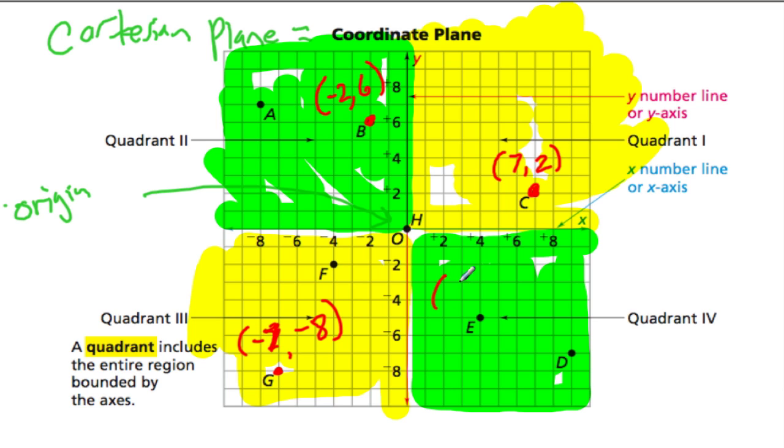And the last thing, quadrant four, we have point E, which is at one, two, three, four, and then down five. So it's four, negative five. Notice four, negative five is kind of the reverse here because here we have negative x and a positive y.